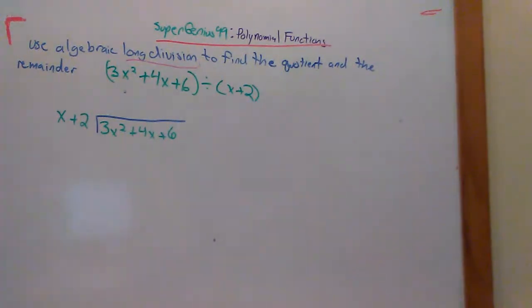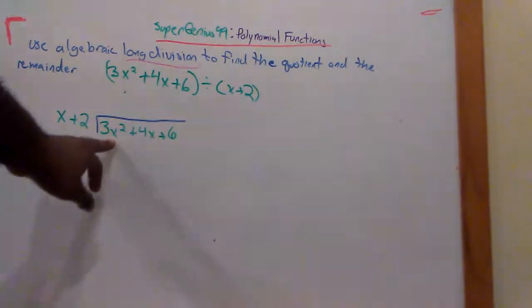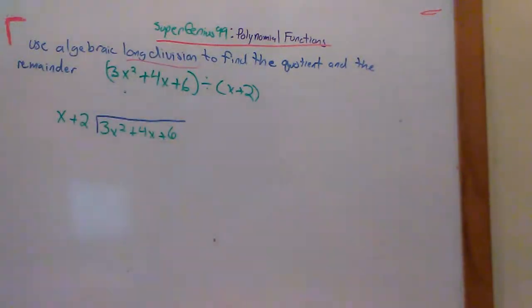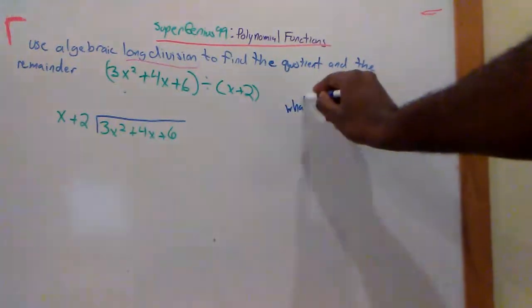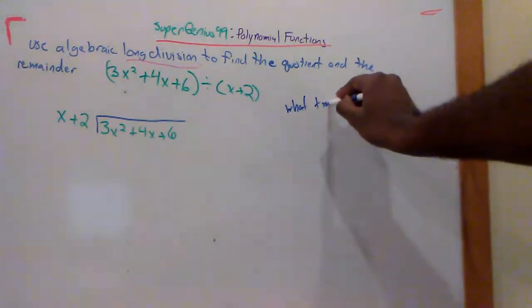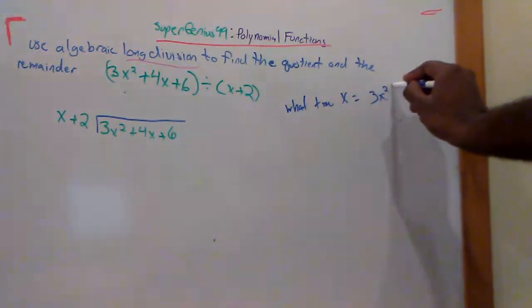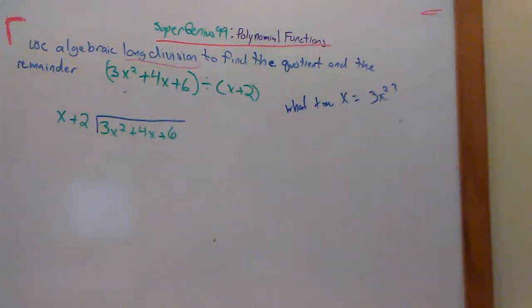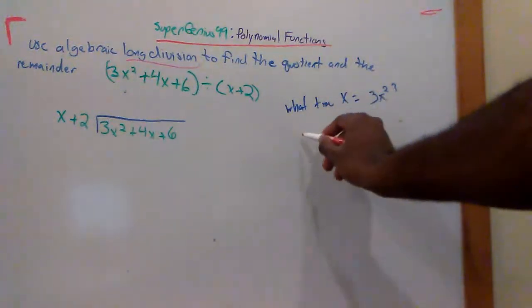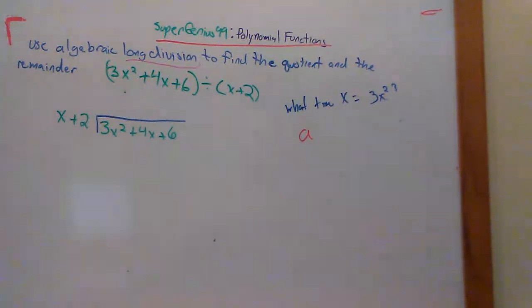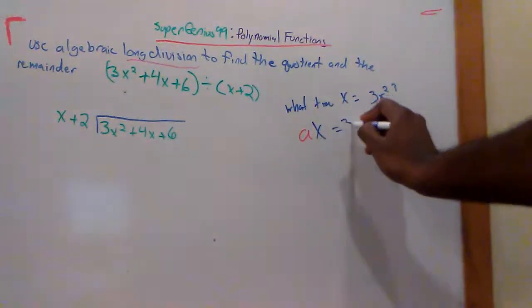And then from there we just start our division process. So the first thing I ask myself is what times x gives me 3x squared. So let's put this over here. What times x equals 3x squared. In other words, some variable, we'll call it a, times x equals 3x squared.